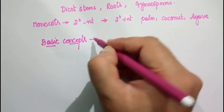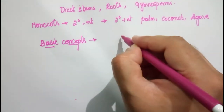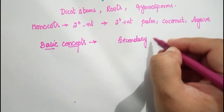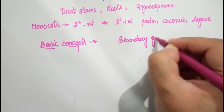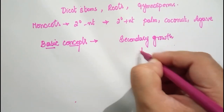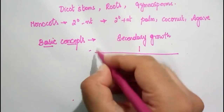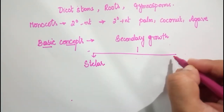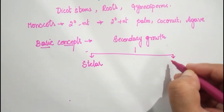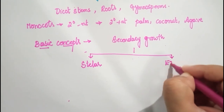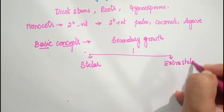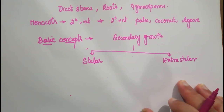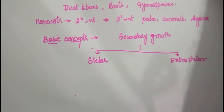Secondary growth occurs in two regions. The first region where secondary growth occurs is called the stelar region, and the second region where it occurs is called the extra-stelar region.